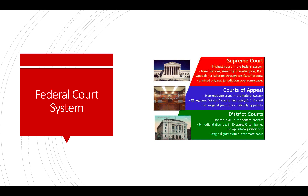Next are the appeals courts — they're the intermediate level courts. There are 12, including the D.C. Circuit courts, and they have no original jurisdiction; you can't just file suit in a court of appeal. They have appellate jurisdiction. Finally, the Supreme Court is the highest court in the federal system. There are nine justices. They have appeals jurisdiction through the certiorari process and limited original jurisdiction over some cases — if a question is so important and has never been answered, they may take it on original jurisdiction, but it's very, very rare.